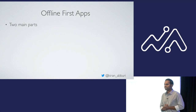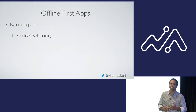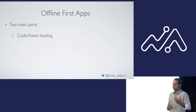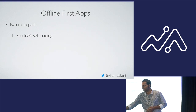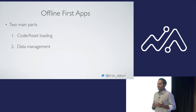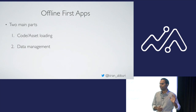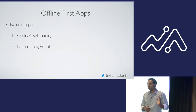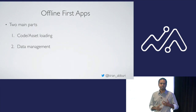Any offline-first application has two main parts. The first is how to load code assets like JavaScript, CSS, and images during offline mode — we generally use service workers for this. The second part is managing the application's data in offline mode. There's a lot of content about service workers already, so I'll focus on the second part: managing data for an offline application with GraphQL and Apollo.